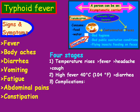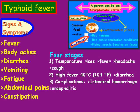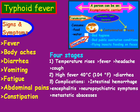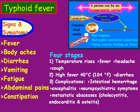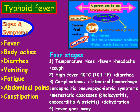Stage 3 is where the complications occur, typically two to three weeks in. These include intestinal hemorrhage, encephalitis, neuropsychiatric symptoms, metastatic abscesses such as cholecystitis, endocarditis, and osteitis. Dehydration is also a possible complication. Stage 4 is essentially where the fever goes away, also known as defervescence.